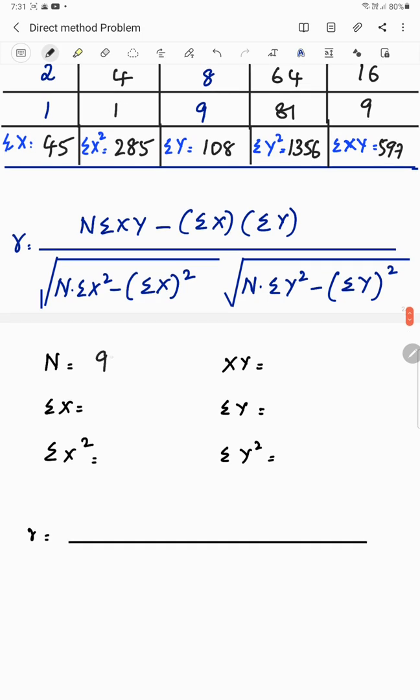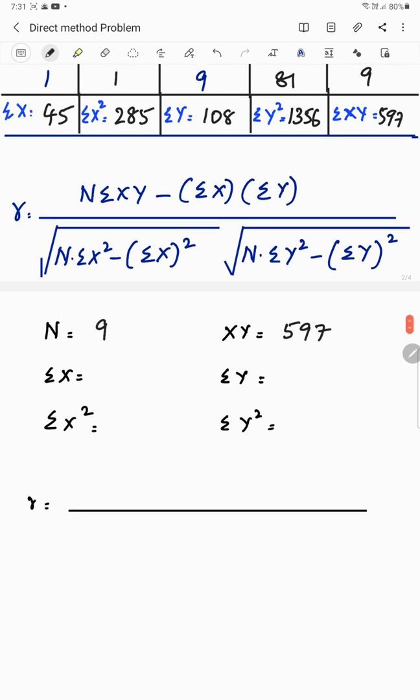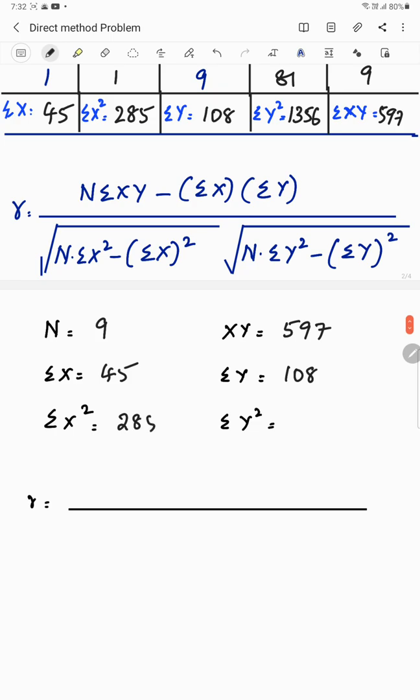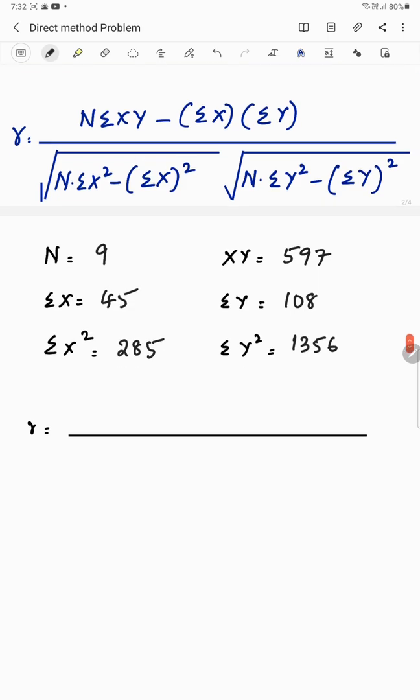N as you all know is number of items. We have 9. And then xy you got 597. And then x, summation x you got 45. Summation y you got 108. Then x square you got 285. y square you got 1356. Very simple. You have the formula right in front of you. You are just putting all these values into the formula.